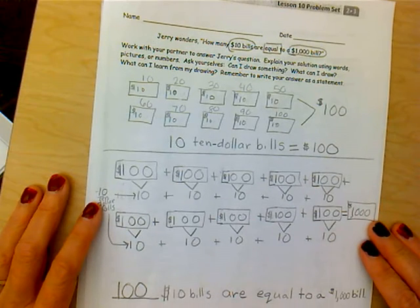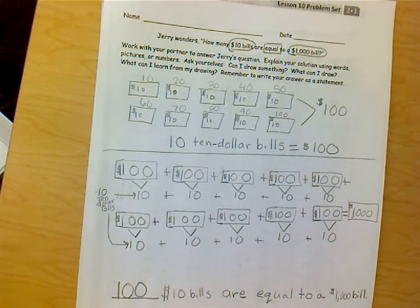This is one possible way that you could have done this problem. I'm not saying it's the only way. It was the way that I chose how to do this problem. You can look at what I did. Yours might look different than this. But the bottom line is there are ten $10 bills, which is equal to a $100 bill.